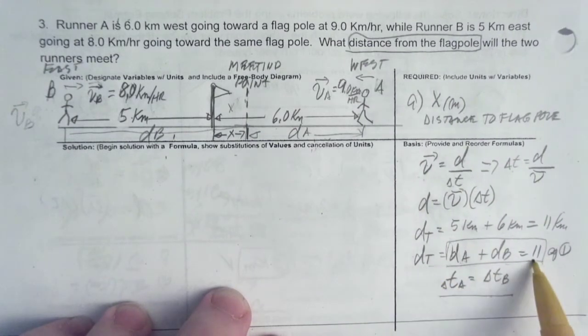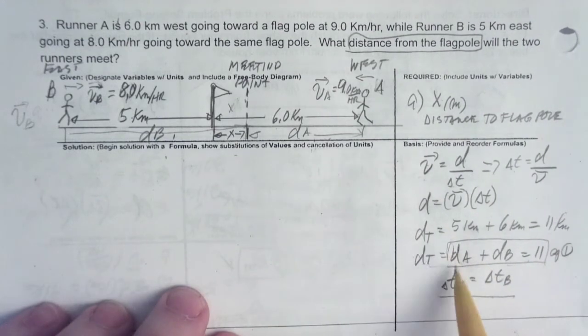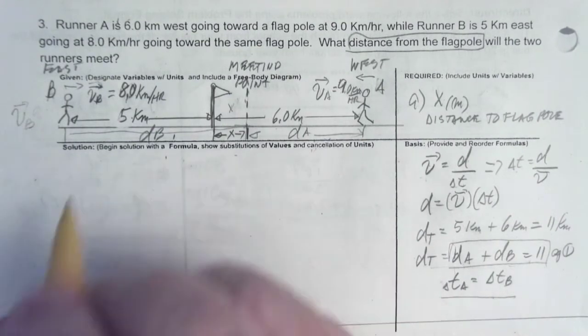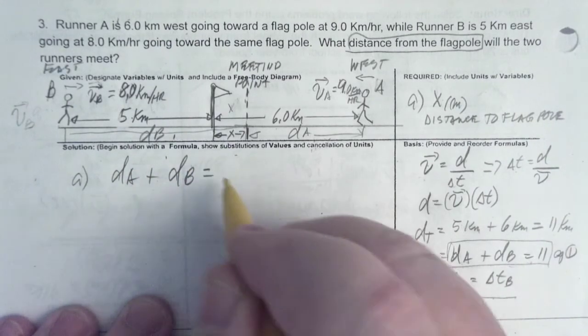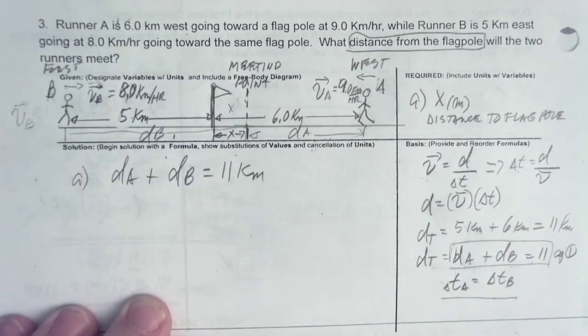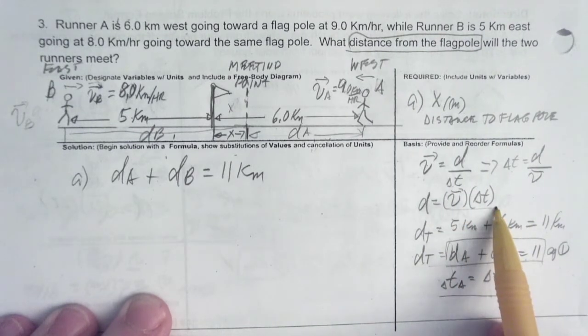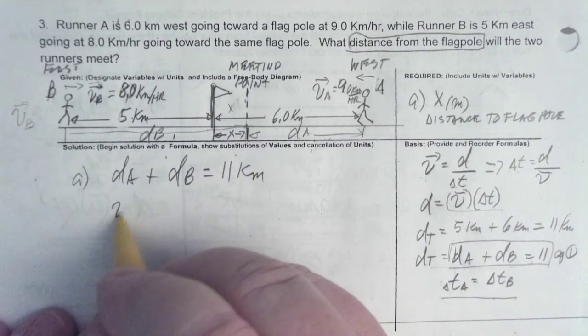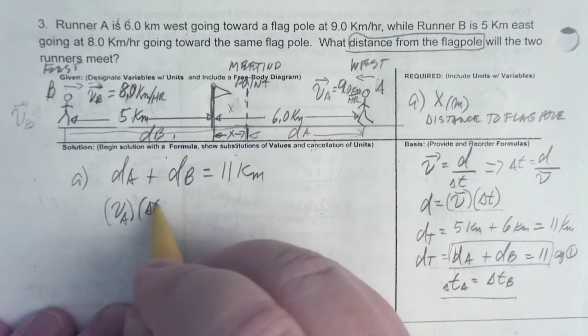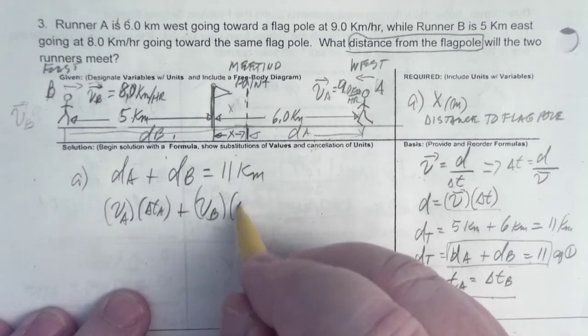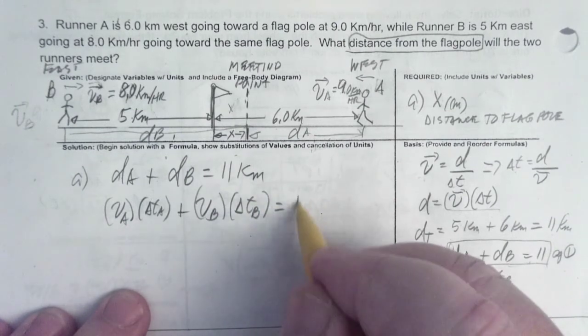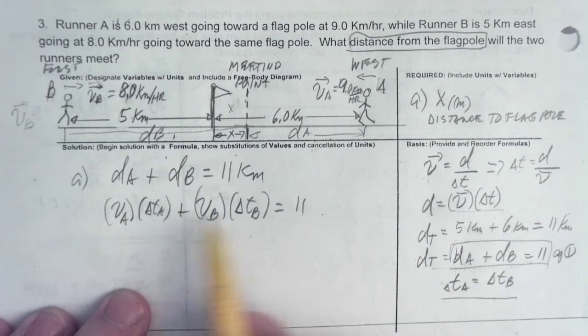So, I recommend we start with this equation, which is actually a combination of these two. And we write that. Remember that you have to start with an equation. So, DA plus DB is equal to 11 kilometers. I hope that's understandable to everybody. And now, using this equation, we're going to replace DA and DB. So, DA is VA times delta TA plus VB times delta TB is equal to 11. Now, because these are the same, then they can be both just T. So, we're going to replace that.